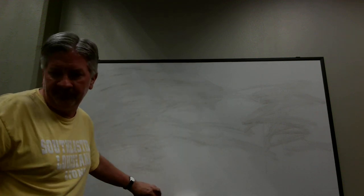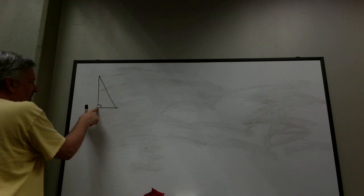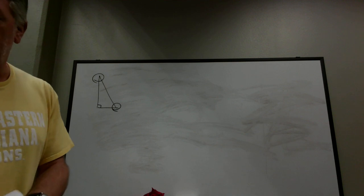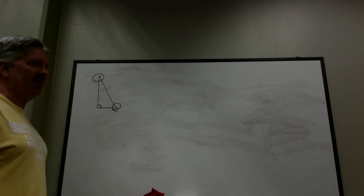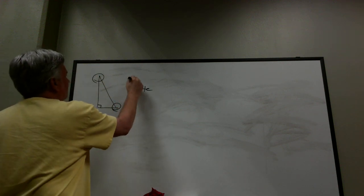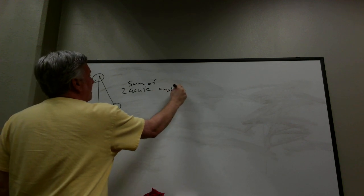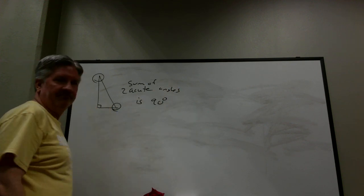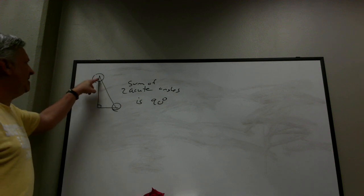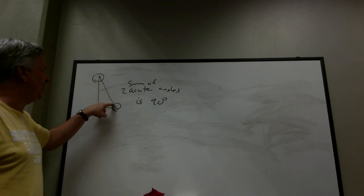What is the sum of the acute angles in a right triangle? The right angle is 90 degrees. We know all three angles sum to 180. So this angle plus this angle plus 90 equals 180, which means the two acute angles must sum to 90 degrees. They don't both have to be 45 — they just have to sum to 90.